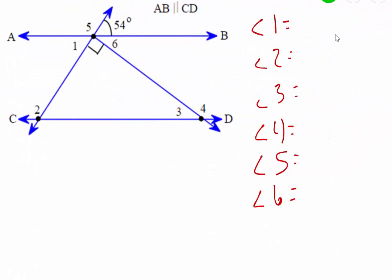For this video we're going to find angles one through six and we are told that the two horizontal lines AB is parallel with CD.